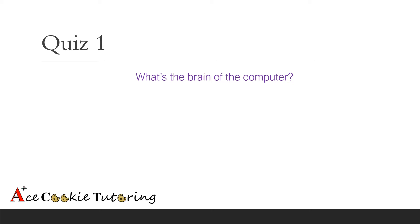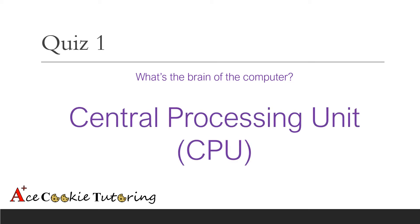We have learned about four parts of the computer so far, so before we move on to the next three, let's do a quick check: what's the brain of the computer? The answer is the central processing unit. If you missed that, go back to the slide about the CPU because Adam explained what it does and why it's important. Alright, we're going to go ahead and learn about the next part of the computer.